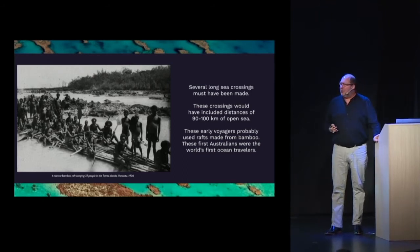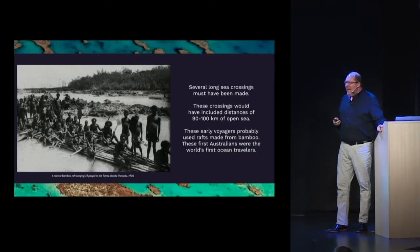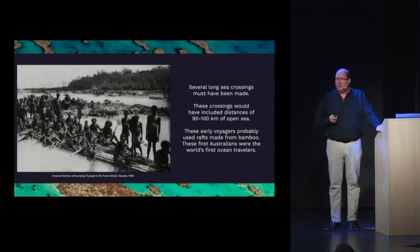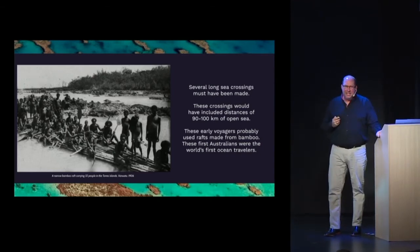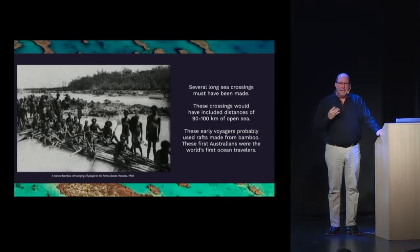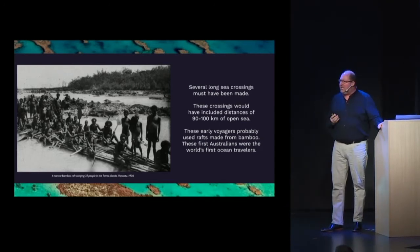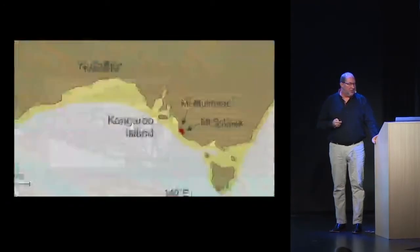They probably used rafts made of bamboo and other woods, and they would have been the world's first ocean travelers. We're talking about 50,000 to 70,000 years ago that these people would have crossed these shallow and quite deep seas from the northern land masses into what we know as Australia today.